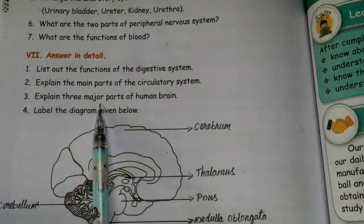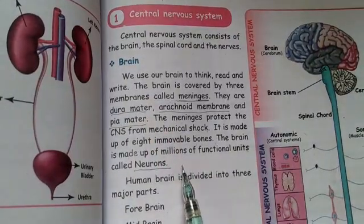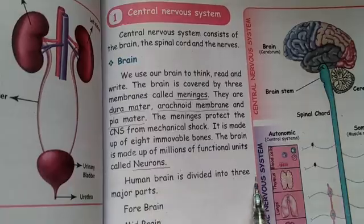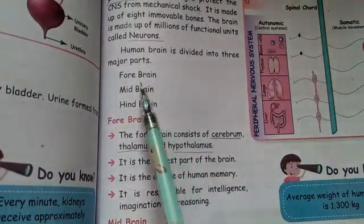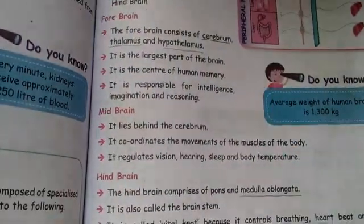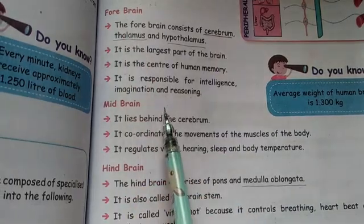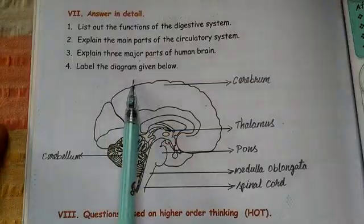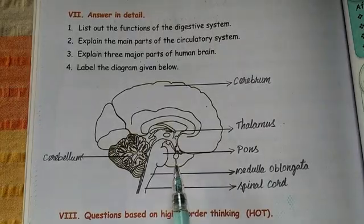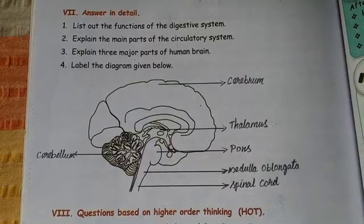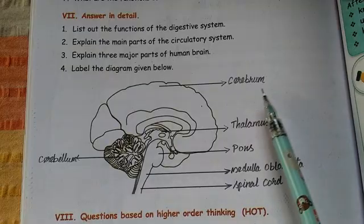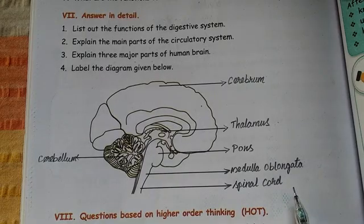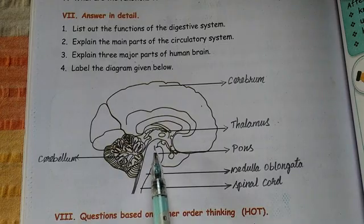Third detailed question: explain the three major parts of the human brain. The human brain is divided into three major parts: forebrain, midbrain, and hindbrain. Write about all three parts. Also, label the diagram given below — label the cerebrum, thalamus, pons, medulla oblongata, and spinal cord. Practice drawing this diagram.